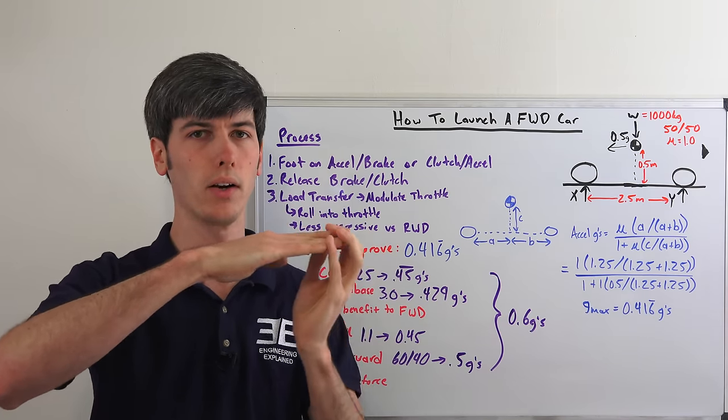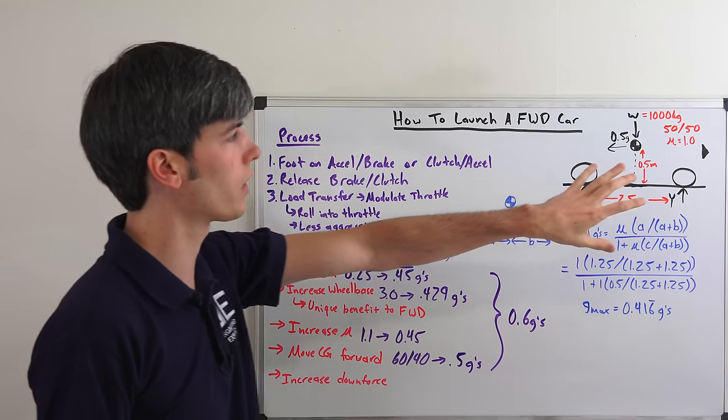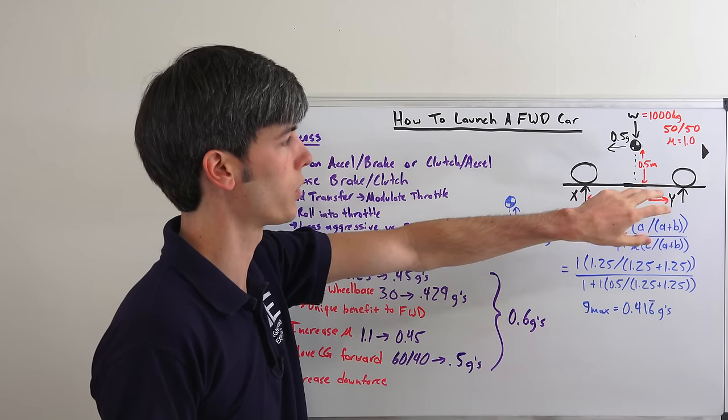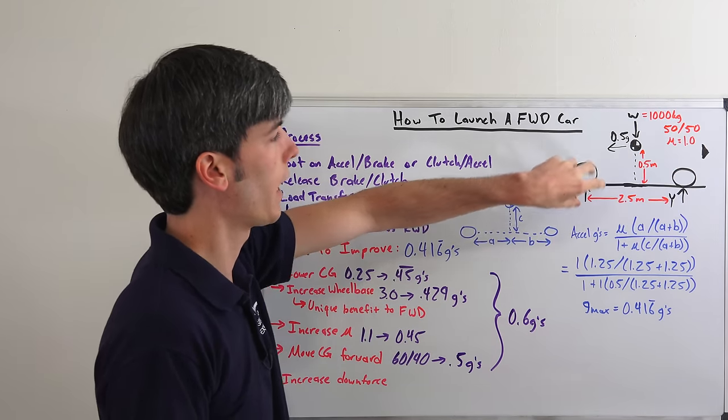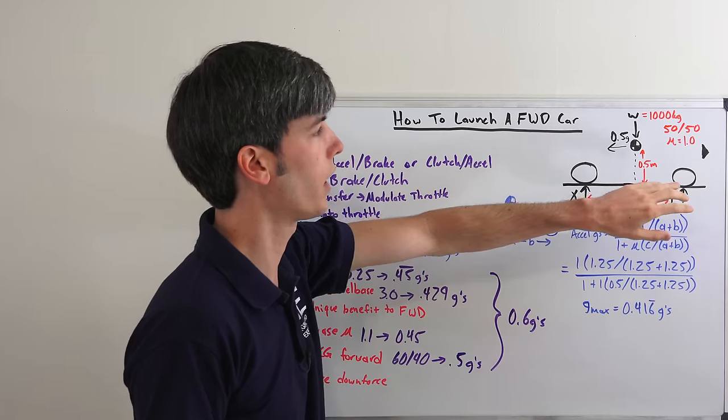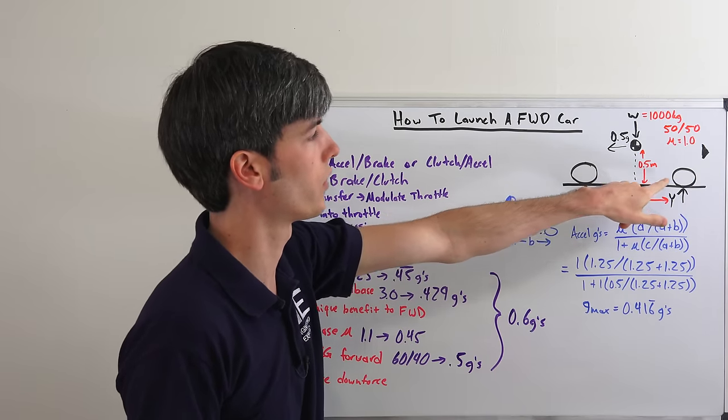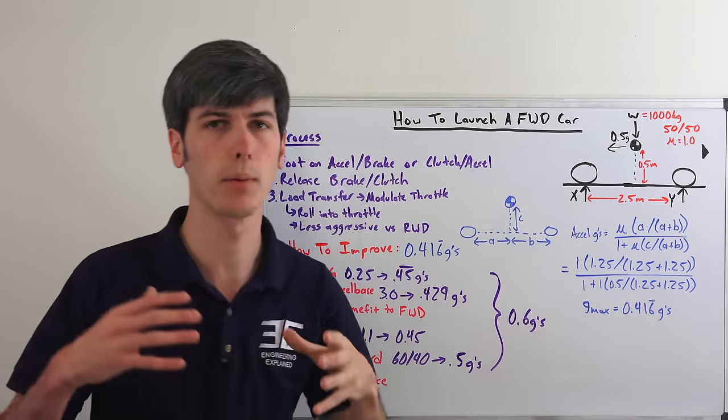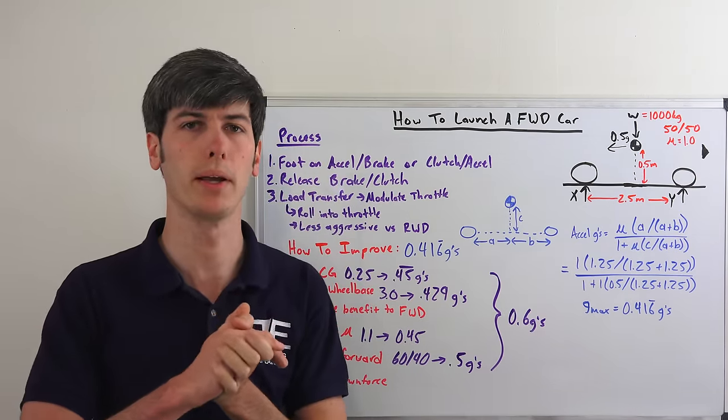So if we start with a vehicle with a 50-50 weight distribution, half the weight on the front tire, half the weight on the rear tire, and we have a frictional coefficient of 1.1 times half, which is the amount of weight on the front tire, gives us our maximum acceleration for that moment.